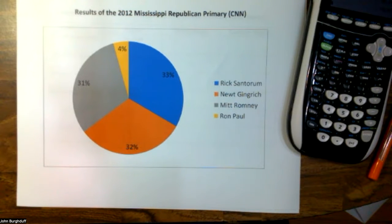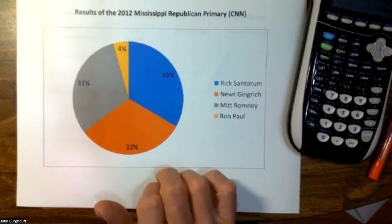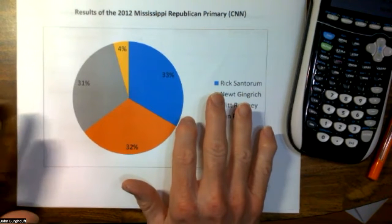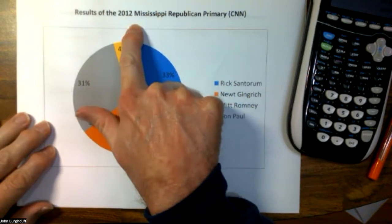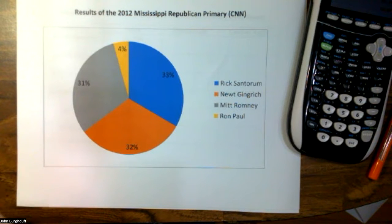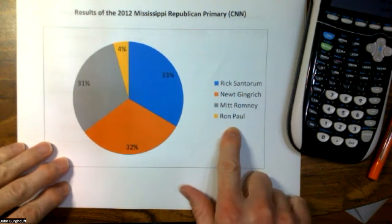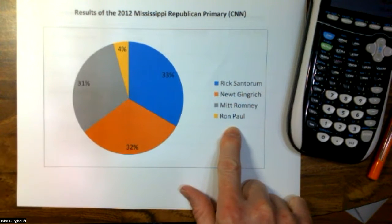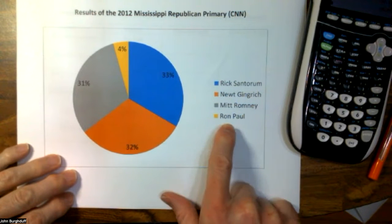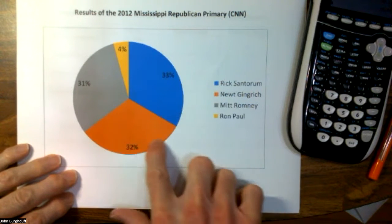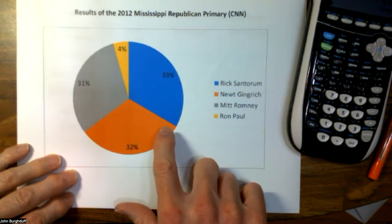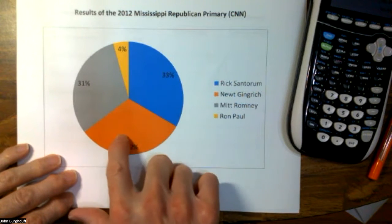So this is an example of a circle graph or a pie chart. What it represents is the results of the 2012 Mississippi Republican primary, and this data was gotten from the CNN website. In that year, there were four candidates running for president as Republicans at the point the Mississippi primary was held. These are their names, and as you can see, what the pie chart is showing is what percentage of the vote each one of these candidates got.